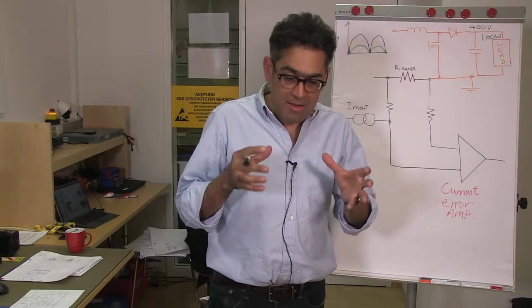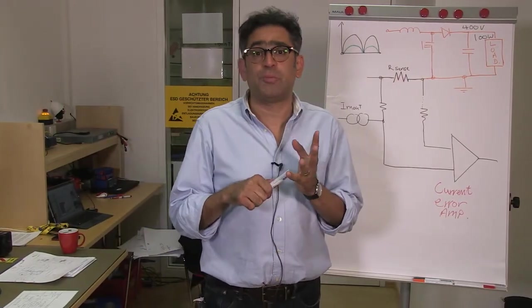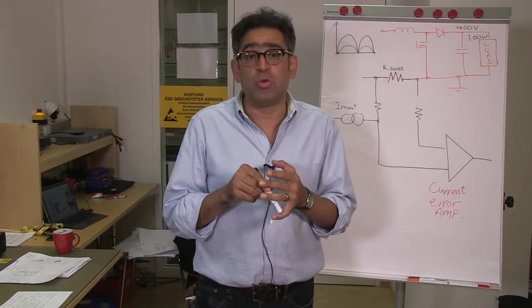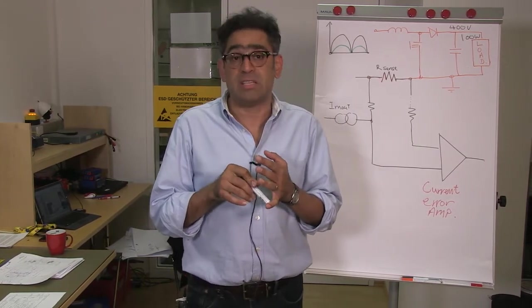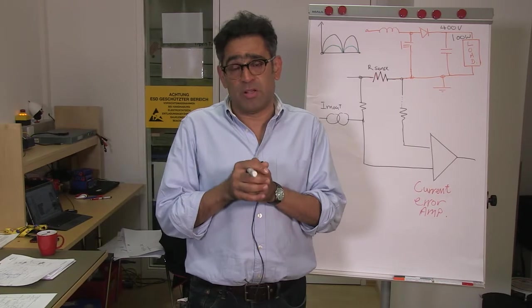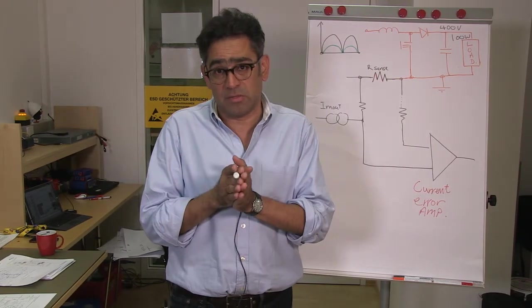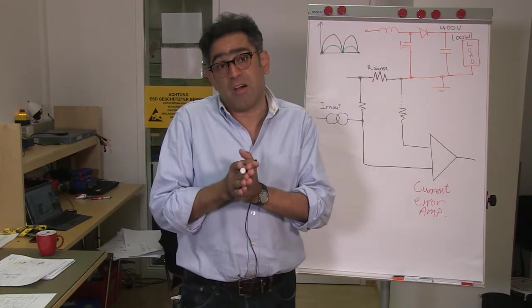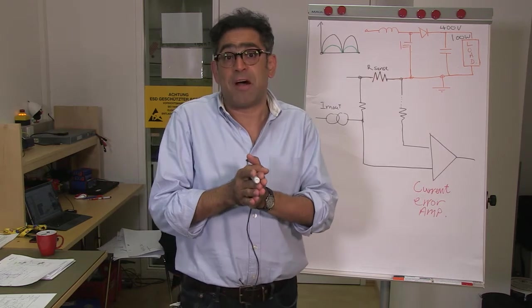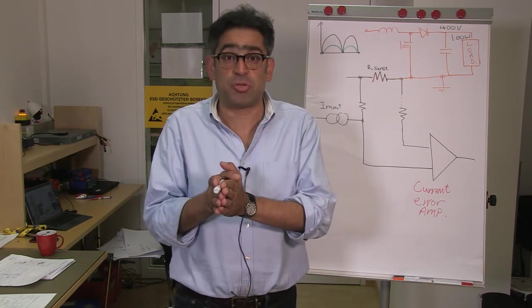Your PFC power stage has got two loops, a voltage loop and a current loop. The voltage loop is quite slow and is relatively easy to measure. The current loop, on the other hand, is actually quite difficult to measure. The current loop is quite fast, anything between 5 to 10 kHz crossover frequency.